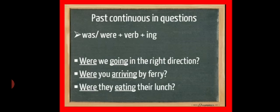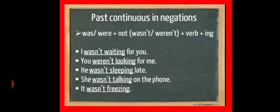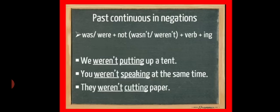Now next is negation. In negative sentences, you have to just add not with was or were. Like I was not waiting for you, you were not looking for me. The sentence structure will be subject plus was or were plus not plus verb plus ing. We use were when our subject is we, you or they.